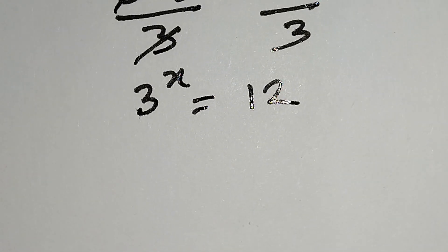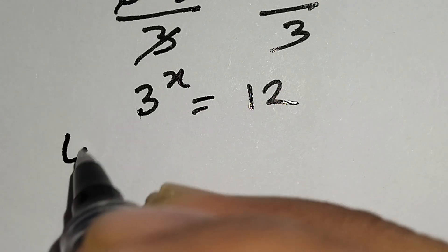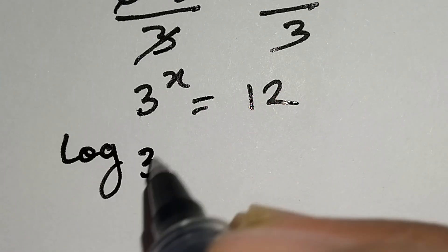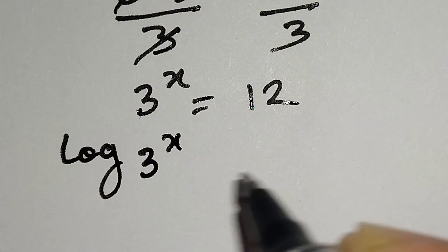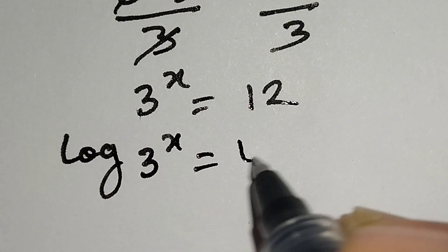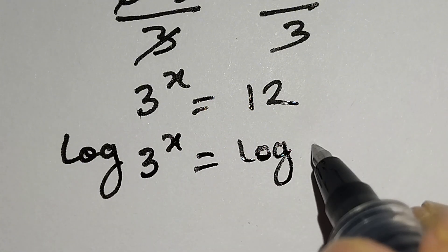Now we will take log on both sides. So we can write: log of 3 to the power x is equal to log 12.